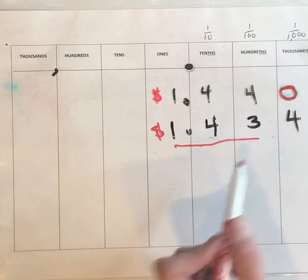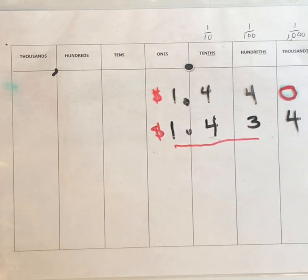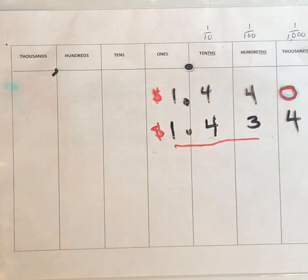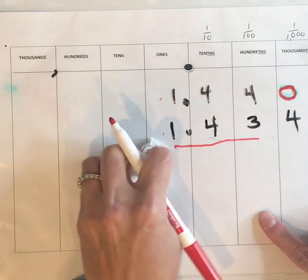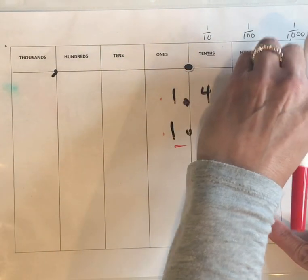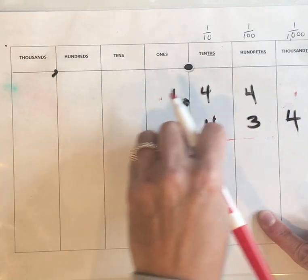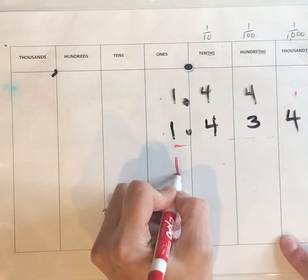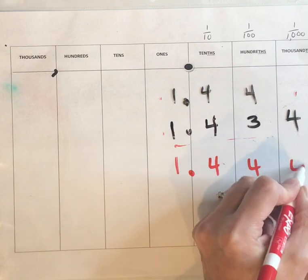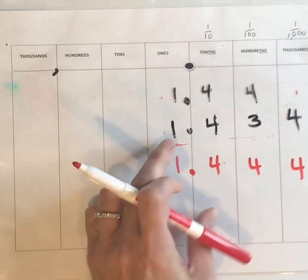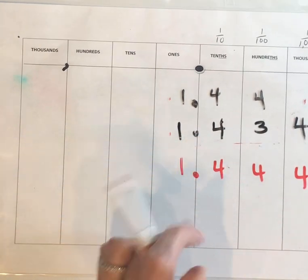Now what if we change this up a bit and consider a new number in the mix: one and four hundred forty-four thousandths? Now we have something interesting going on — this is a little different.